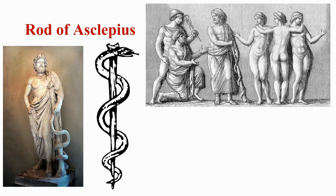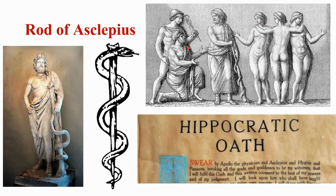Now coming to the Rod of Asclepius. Asclepius is also a Greek God — the son of the Greek God Apollo. In this picture we can see Hermes with the Caduceus and Asclepius with his own magical stick, the Rod of Asclepius. According to Greek mythology, Asclepius is considered as the God of healing, and his acts of healing and cure were exceptional. Hygieia and Panacea are his two daughters.